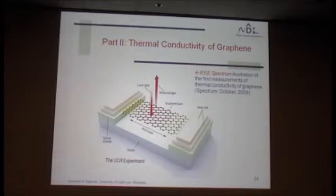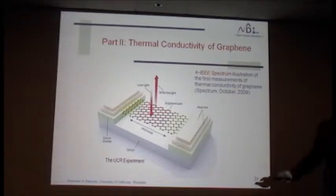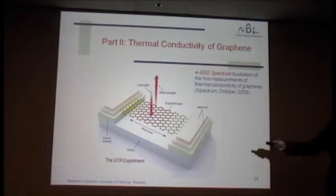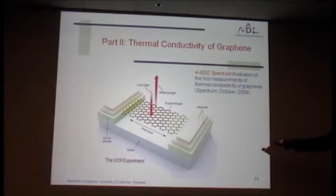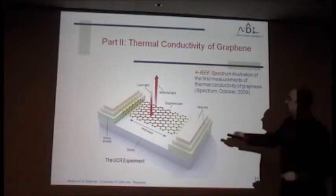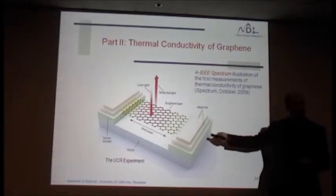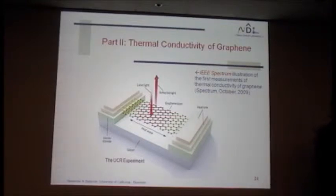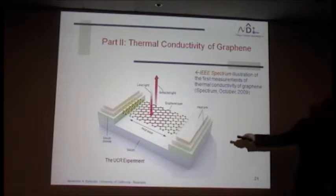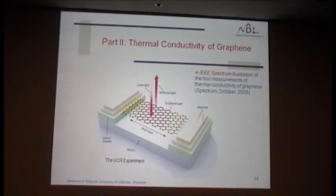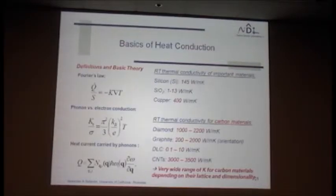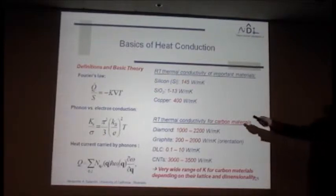Now let's go to thermal conductivity. This is very related to what we just did, because the idea of strong dependence of G-peak position on temperature leads to the idea of using a Raman spectrometer as a thermometer. The whole experimental approach goes like this: if you manage to suspend a graphene flake over a trench, and then do laser heating in the middle of the graphene flake — now intentionally increasing the power to produce local heating — then by the position of the G-peak you can determine the local temperature rise. Before I go to this, let me remind you of some basics of heat conduction.